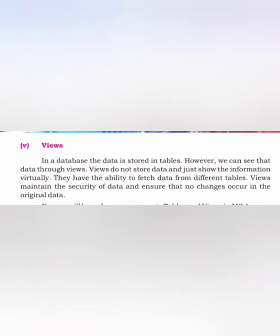چوتھی component ہے view۔ View کیا ہے؟ کسی بھی database کو — جو tables ہم save کر رہے ہیں — ہمارے user کے سامنے وہ کس طرح سے present ہو گا۔ ہم different forms generate کرتے ہیں جس کے ذریعے کوئی بھی user یا تو data enter کرتا ہے یا پھر اسے اپنی screen پر retrieve کرواتا ہے — وہ screen جو ہم generate کرتے ہیں اسے ہم views کہتے ہیں۔ یہ تھے آپ کے five components of database management system۔